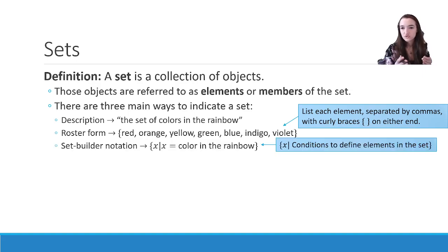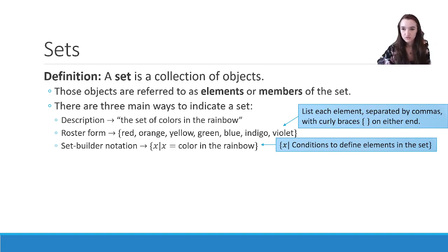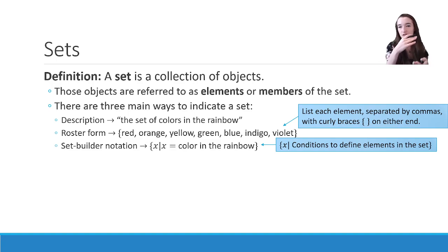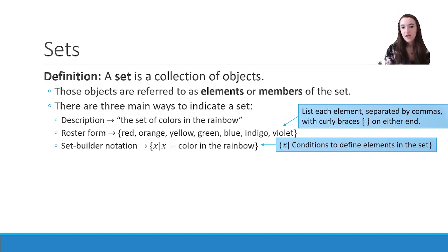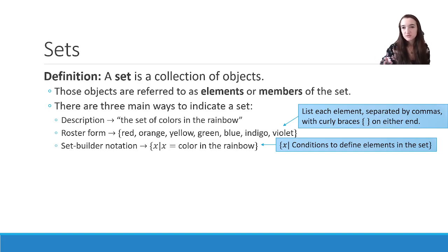The third notation is a little bit trickier and we're not going to see it as often, but we will explore it a little bit in this chapter. Set builder notation is the fancier notation that can be used especially with mathematical terms. We still use our curly brackets, but we essentially define the elements either verbally or using some sort of equation. For example: {x | x = color in the rainbow}. The x represents the elements, and then we define what properties x has — x has the property of being a color in the rainbow. So it's x, a vertical line, then the conditions to define x or the elements in the set.